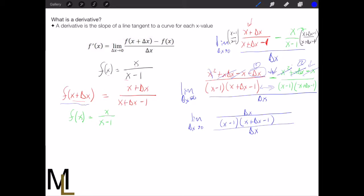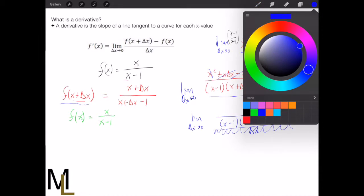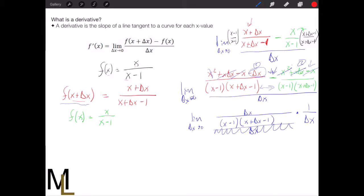Now remember, when it's just divided by delta x on the bottom like this, we can also rewrite this as times one over delta x. I think this is a better way to look at it because what's going to happen here is now we go through and we actually see we get a delta x on top, delta x on bottom. Those cancel to one.